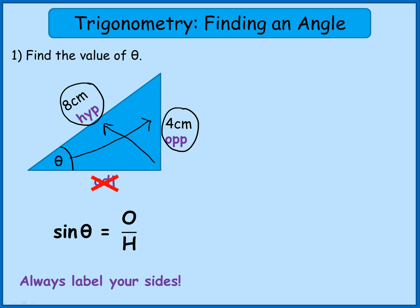So I'm going to write that down. So sine theta is opposite divided by hypotenuse. What I need to do then is substitute in the information I know. So I know that the opposite is 4 and I know that the hypotenuse is 8. So all I've got to do is replace O and H with 4 and 8. So that gives me sine theta is 4 divided by 8.